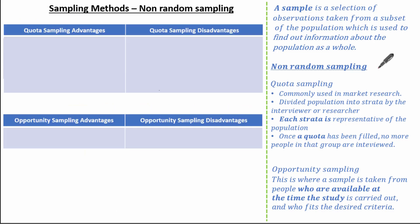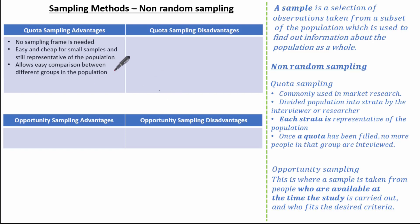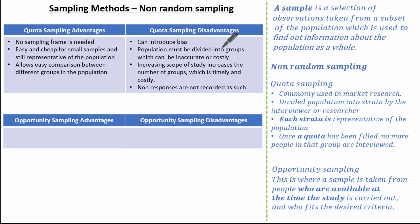Now we've gone through two methods of non-random sampling — quota sampling and opportunity sampling — let's go through the advantages and disadvantages of each. For quota sampling, the advantages are: we don't need a sampling frame, it's cheap and easy for small samples, still representative of the population, and it allows easy comparison between different groups. Disadvantages: it can introduce bias from the researcher, the population needs to be divided into groups which can be inaccurate or costly, increasing the scope of study increases the number of groups which is time-consuming and costly, and non-responses are not recorded as such.